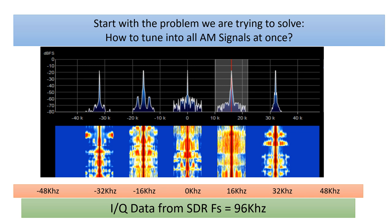Just for technical details, as you can see at the bottom here, the IQ data rate is 96 kilohertz. That basically means our spectrum is negative 48 kilohertz to positive 48 kilohertz. We have five different AM signals here: one at DC, one at 16 kilohertz, one at 32 kilohertz, another at negative 32, and another at negative 16 kilohertz. Five AM signals being received all at the same time—how do we listen to them all at once?